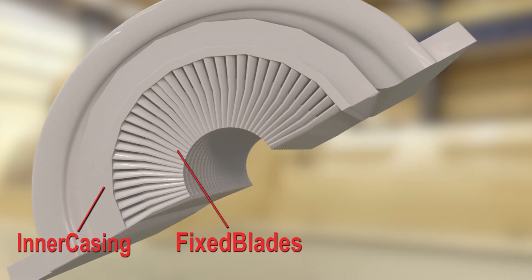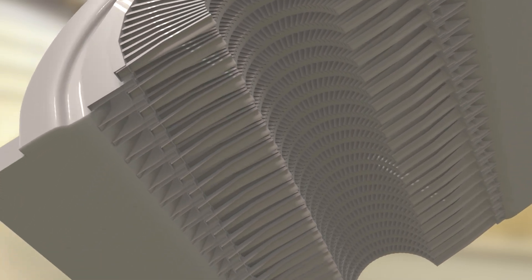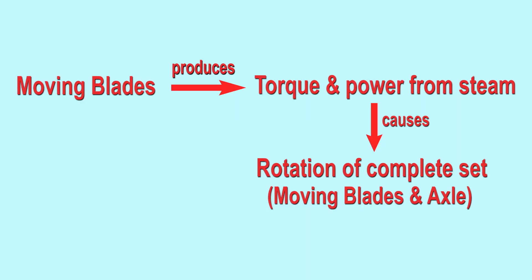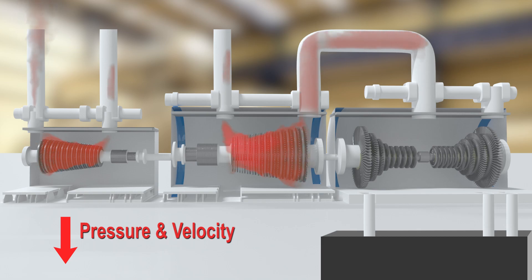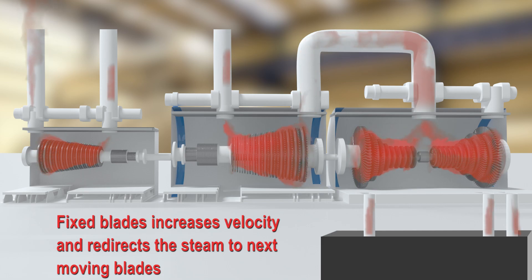Moving blades produce torque and power from the steam flowing over them, which causes rotation of the complete set of moving blades and axle. When steam flows in the forward direction, its pressure and velocity reduce. Here comes the role of fixed blades — they increase and maintain velocity and redirect the steam to the next moving blades.